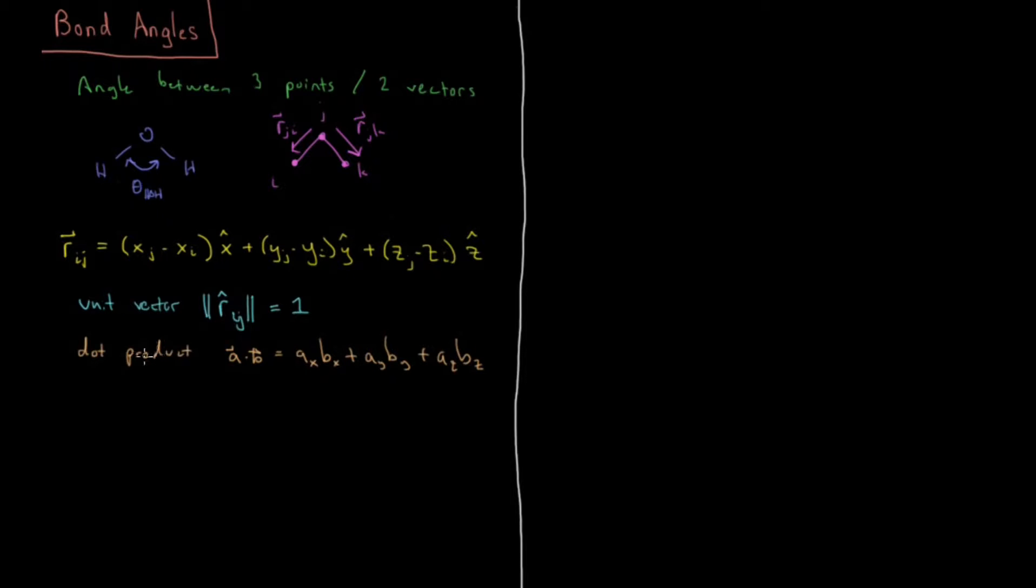And also the magnitude of the vector is what we previously defined in the video on bond length. If we go ahead and define that again, magnitude of RI,J is equal to XJ minus XI squared, plus YJ minus YI squared, plus ZJ minus ZI squared. And then take that all to the one-half power, taking the square root of all of it.